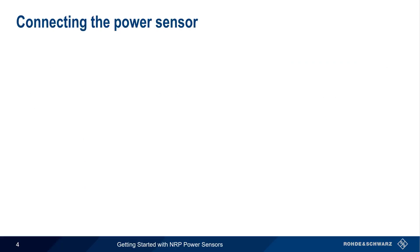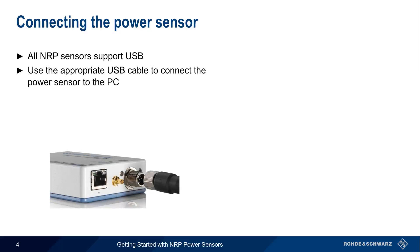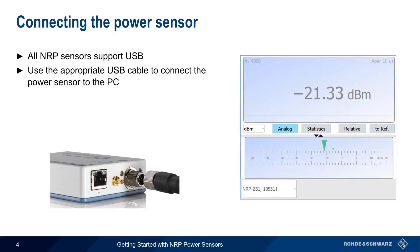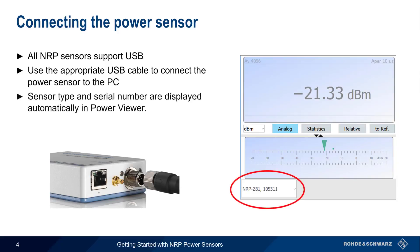Although many NRP Power Sensors support LAN connections, in this presentation we'll be using USB, which is supported by all NRP Series sensors. Once the sensor is connected using the appropriate cable, Power Viewer should automatically detect the connected sensor and display the sensor type and serial number at the bottom left portion of the screen.